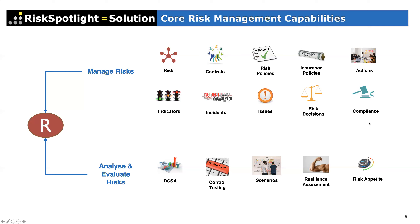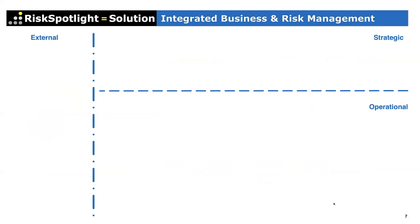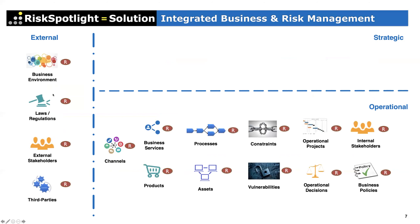If the risk management software we give to the first line doesn't contain the elements they actually work with every day, it creates a disconnect — every time they log in, they see nothing related to their business. So we had to go beyond what typical vendors provide and think about what the first line is actually doing: the external environment, the strategic aspects, and the operational aspects of the business.